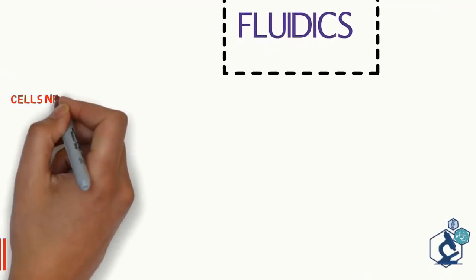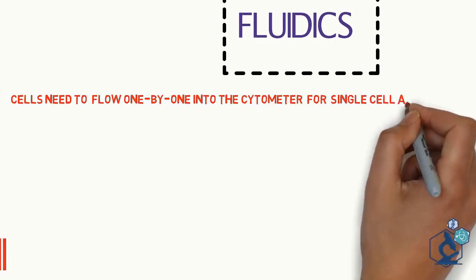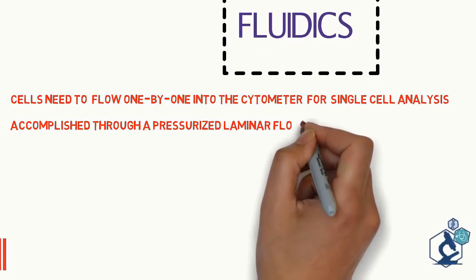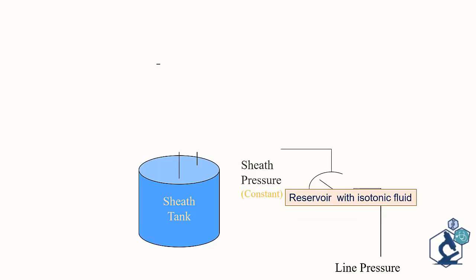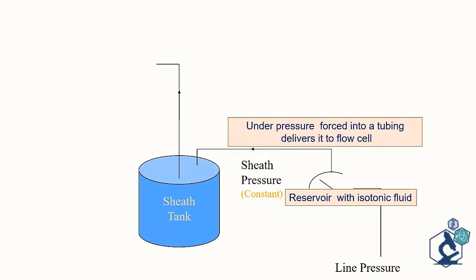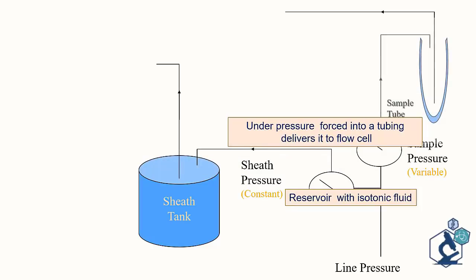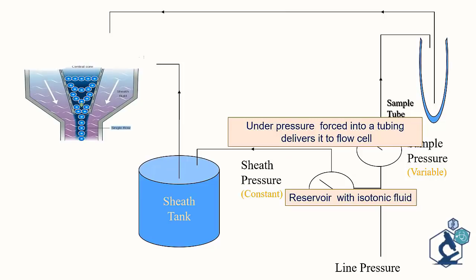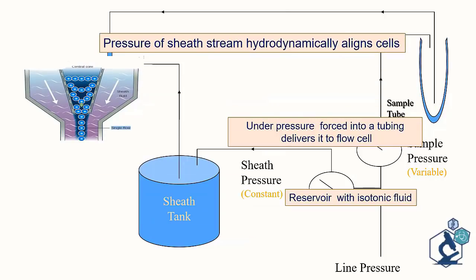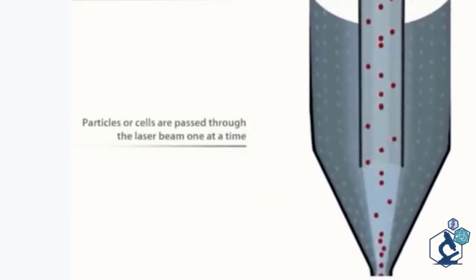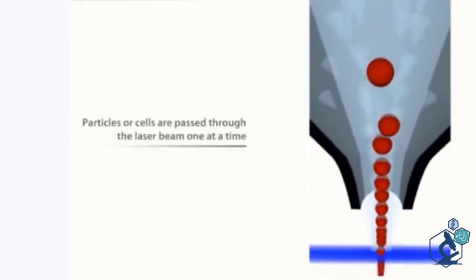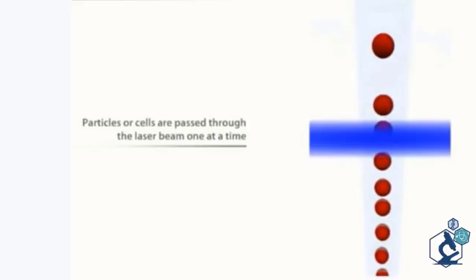So let's begin with fluidics. The cells need to flow one by one into the cytometer to do single cell analysis which is accomplished through a pressurized laminar flow system. The sheath tank is a reservoir with isotonic fluid which under pressure is forced into a tubing which delivers it to the flow cell. Sample is also injected into the flow cell at variable pressure. Sample fluid flows in a central core that does not mix with sheath fluid. The pressure of the sheath stream hydrodynamically aligns the cells so that they are presented in a single file to the light beam. The introduction of a large volume of fluid into a small volume in such way that it is focused along an axis is called hydrodynamic focusing.